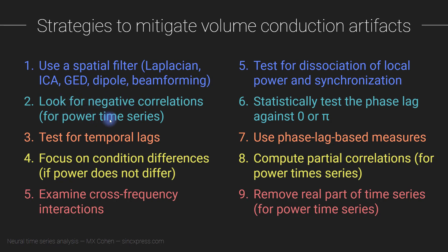Another possibility is to look for negative correlations in power time series. You can look for temporal lags and test whether they are different from zero or pi — which is similar to the next strategy except one uses inferential statistics while the other focuses on designing your tests to look for temporal lags. You can focus on condition differences: if the time-frequency power between two electrodes is similar across conditions but synchronization differs between conditions, then synchronization cannot be attributed to power. You can also examine cross-frequency interactions such as cross-frequency coupling, and test for a dissociation of power and synchronization.